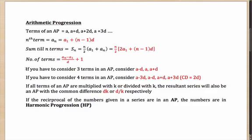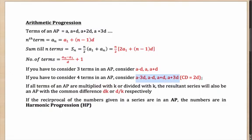A useful tip: when considering 3 terms in an AP, instead of A, A+D, A+2D, use A−D, A, A+D. When you add them, the ±D cancels, simplifying calculations. Similarly for 4 terms, use A−3D, A−D, A+D, A+3D where the common difference is 2D. Multiplying or dividing all terms of an AP by a constant k also produces an AP; the common difference scales by k accordingly.